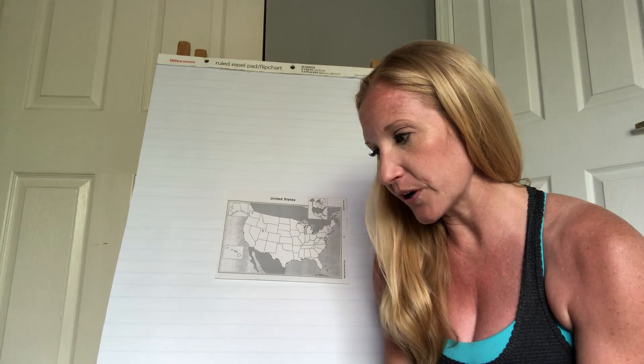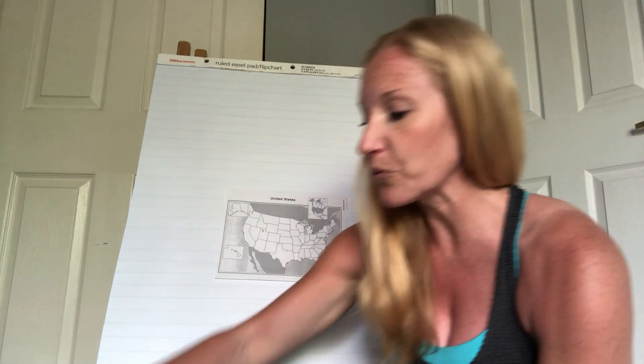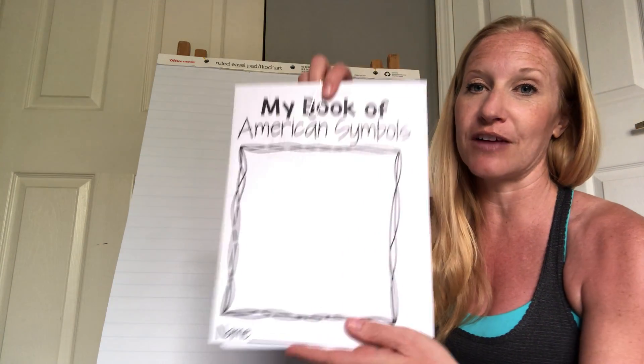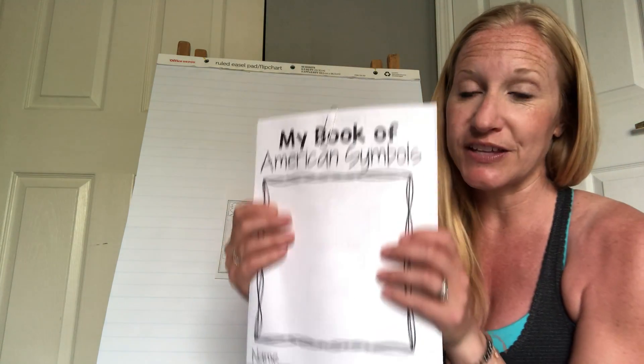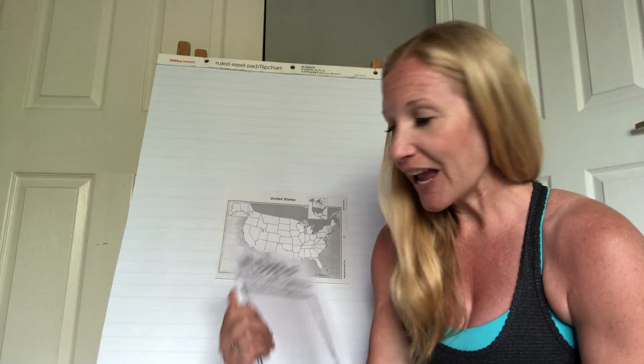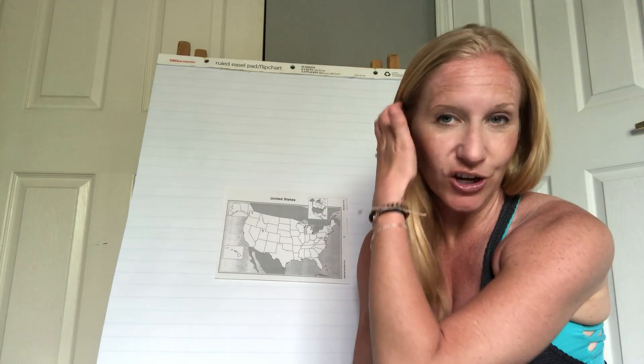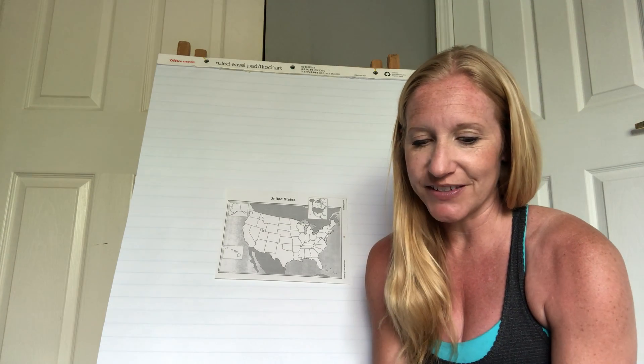Also this week, I know you've been working on your Me on the Map book. This is usually when we pause it and work on our Book of American Symbols as well. I will also be using this book this week. Some of you have already finished it or been working on it — that's fine. You can either do it again or just watch the videos and listen to what I have to say about it.